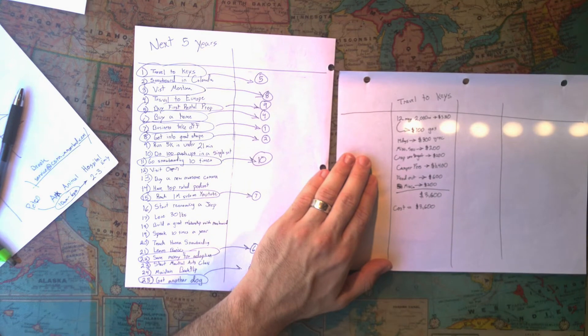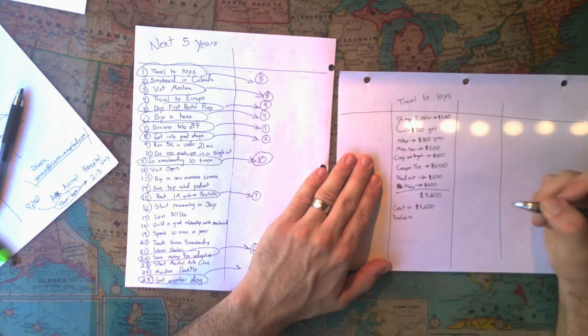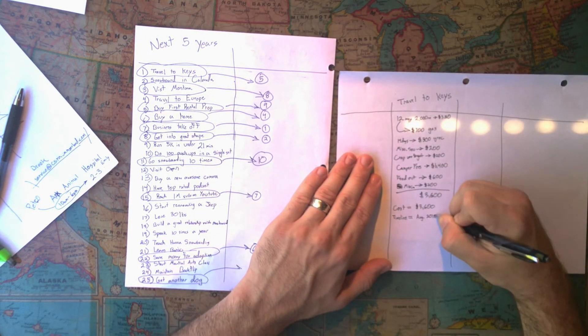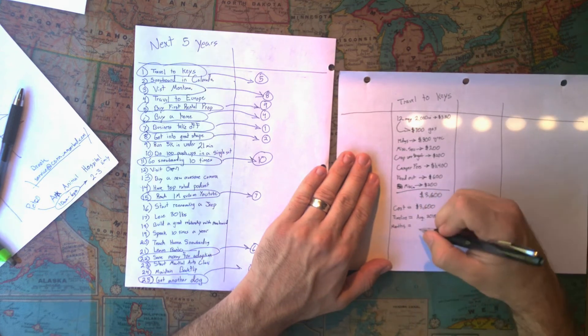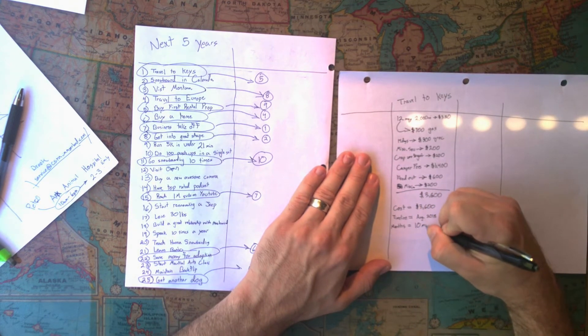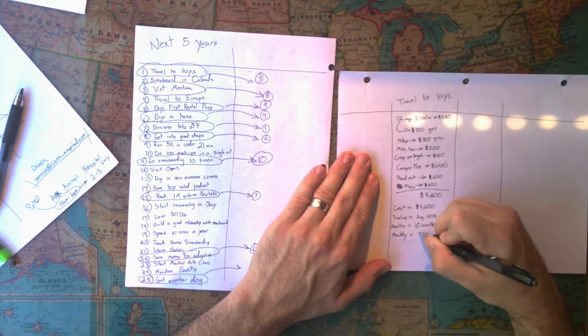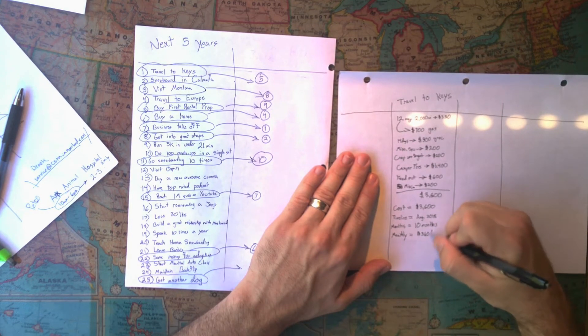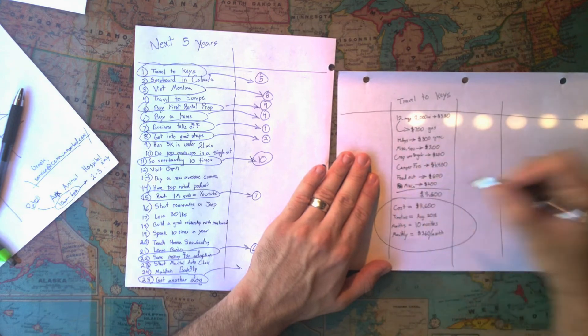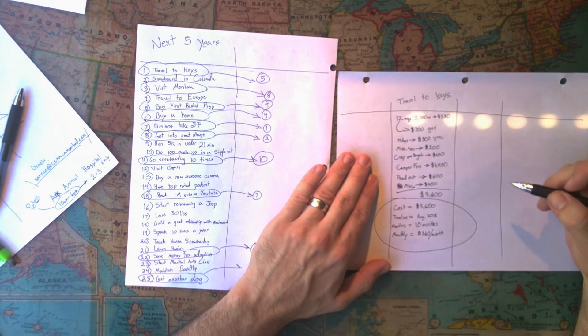But I also need a timeline. Well, I'd like to take this trip in the fall. So if I started saving next month, and that's going to mean 10 months from now, and that means that I need to be saving monthly about $360. That is what I need to know for my trip to the Keys. It's going to cost me $3,600. I want to do it in 10 months from now. And that means I'm going to need to save $360 a month.